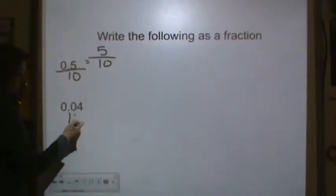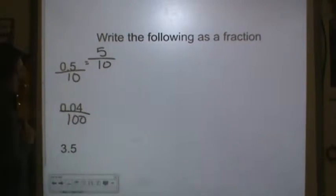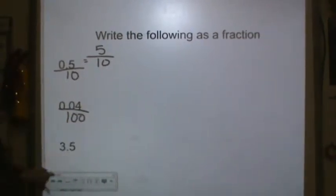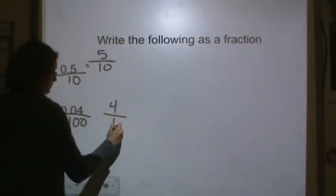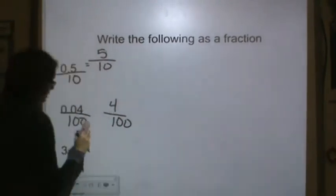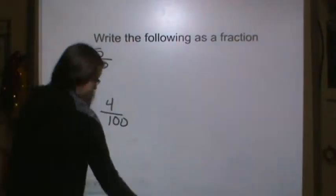Here, remember the trick? 1 and then I've got 2 place values, right? So it's 4 hundredths. And that's how you would read it. You'd read it by saying 4 hundredths.